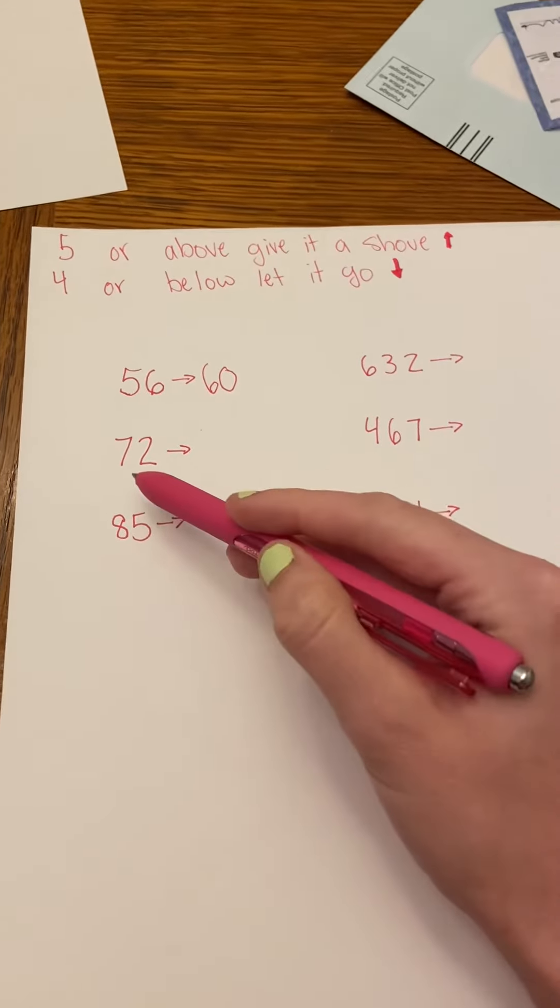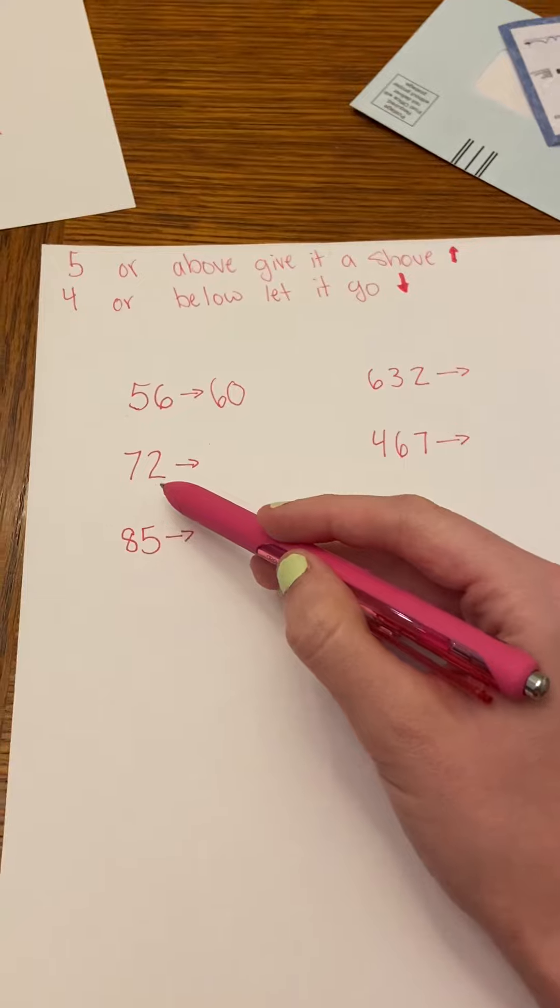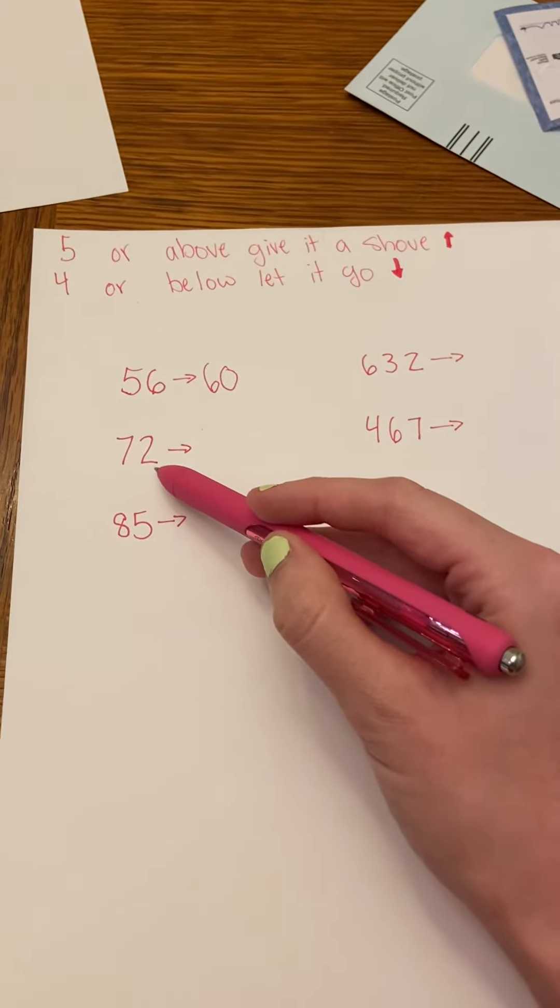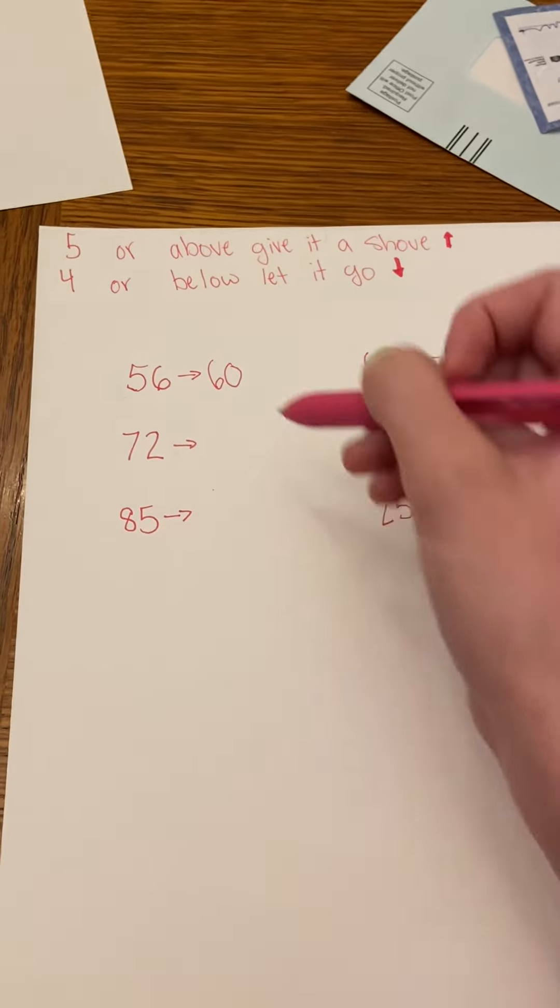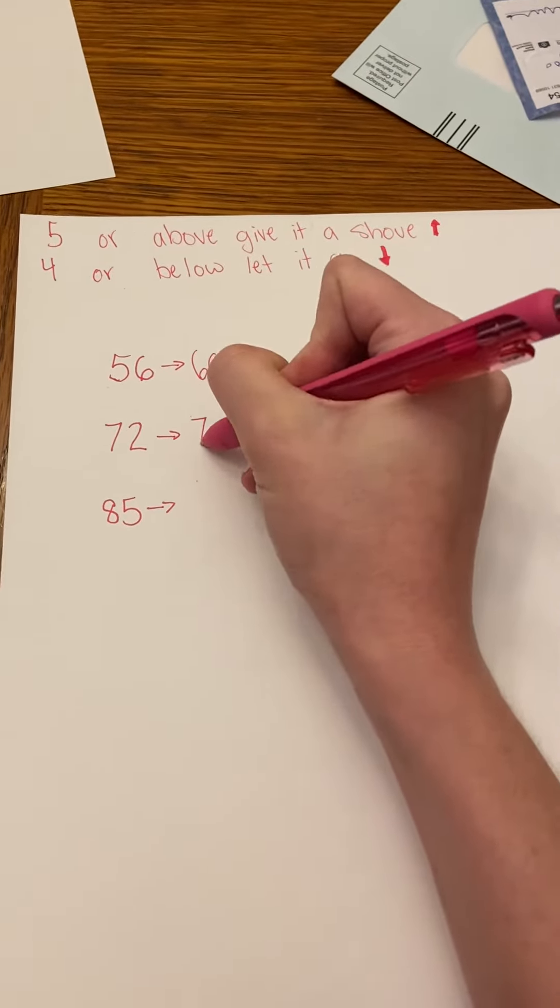If I'm looking at the number 72, I still need to look at the ones place since I'm rounding to the nearest tens. And since it's a two, I need to round down to the ten below, which is 70.